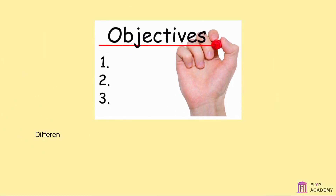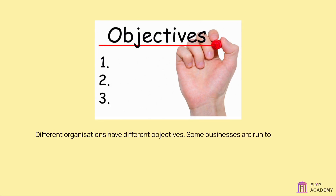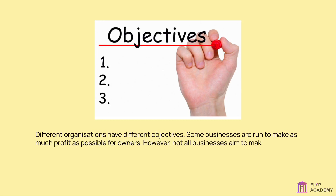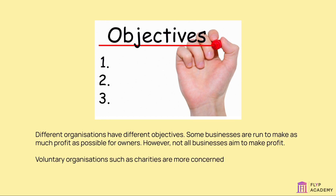Different organisations have different objectives. Some businesses are run to make as much profit as possible for owners. However, not all businesses aim to make profit. Voluntary organisations, such as charities, are more concerned with providing a service to others.